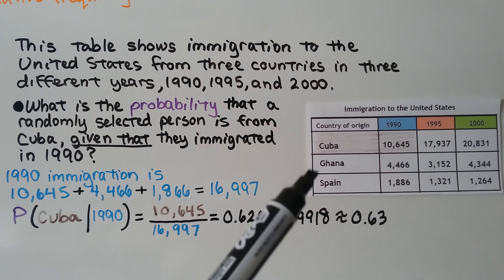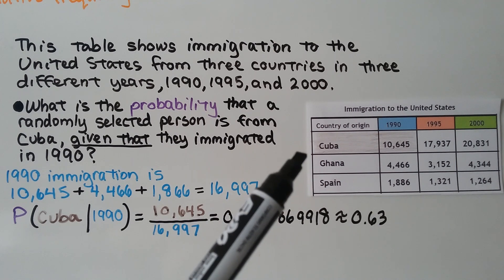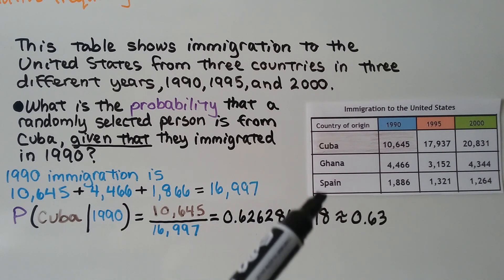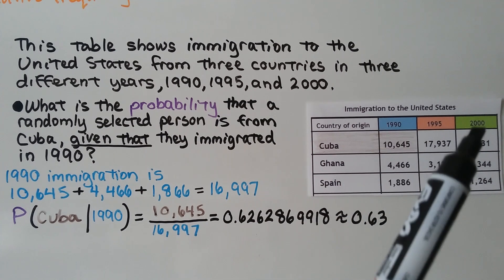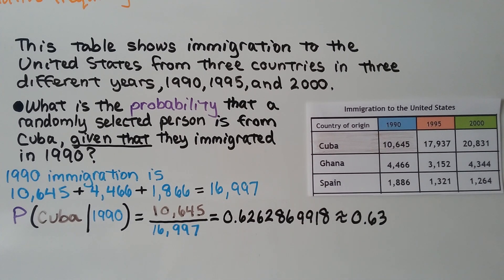Now take a look at this table. It shows immigration to the United States by country of origin — Cuba, Ghana, and Spain — for the years 1990, 1995, and 2000. What's the probability that a randomly selected person is from Cuba, given that they immigrated in 1990?